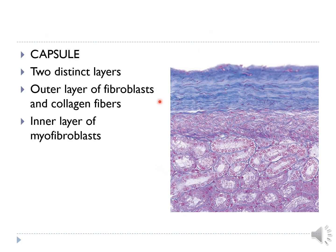Each kidney is covered by a capsule with two distinct layers: an outer layer of fibroblasts and collagen fibers, and an inner layer of myofibroblasts. These myofibroblasts resist over-pressure in the kidney and swelling in cases of hydronephrosis.